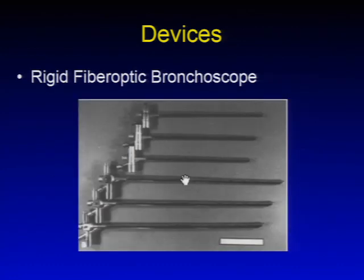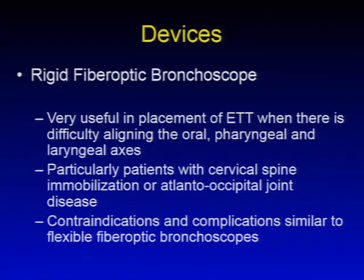Next is the rigid bronchoscope. These are very useful for placement of an endotracheal tube when there's difficulty aligning the oral, pharyngeal, and laryngeal axes, particularly in patients with cervical spine immobilization or atlantooccipital joint disease. Contraindications and complications are very similar to the flexible fiber optic bronchoscope.